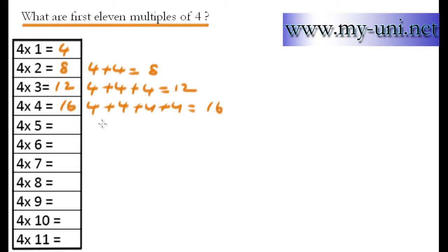4 times 5 means 4 has been added 5 times, that would be 20. The next one, 4 times 6 would be 24.